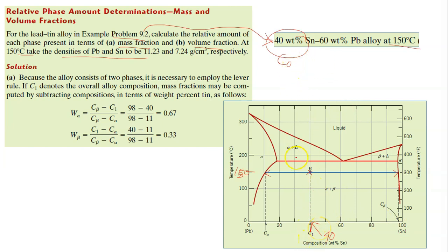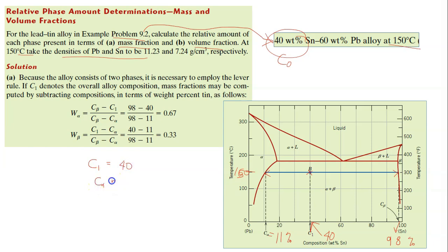From the tie line you need to identify Cα and Cβ, and this is your C0 (also called C1). Cα is the composition of the alpha phase, which is around 11%. Cβ is the composition of the beta phase, which is around 98%. So now you have C1 = 48, Cα = 11, and Cβ = 98.